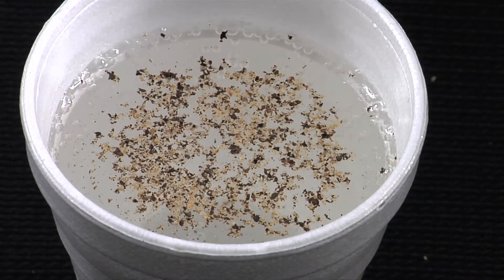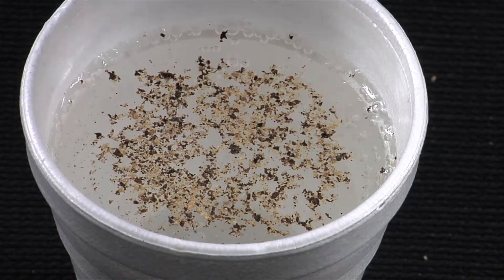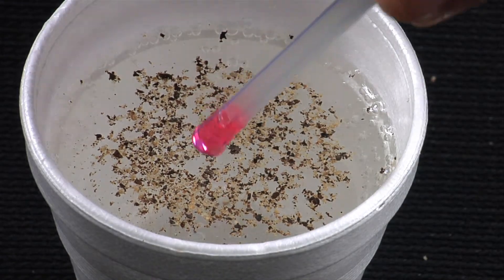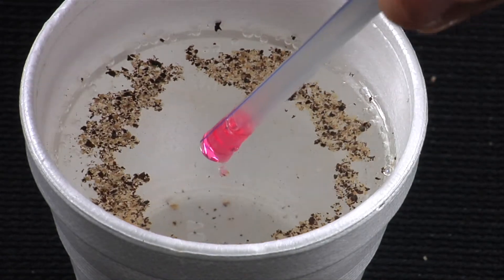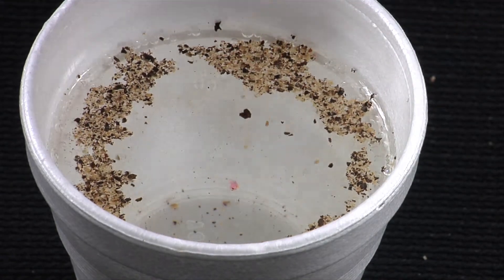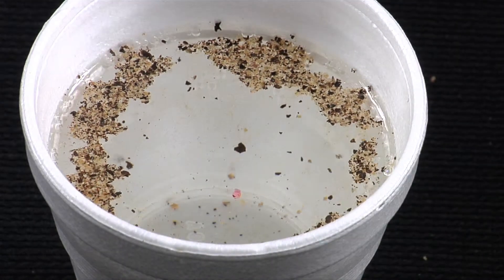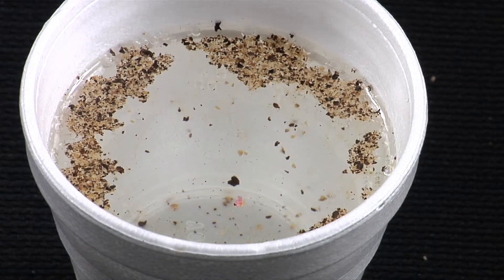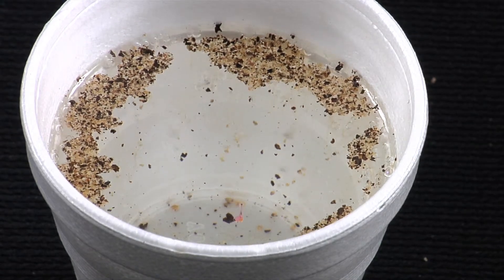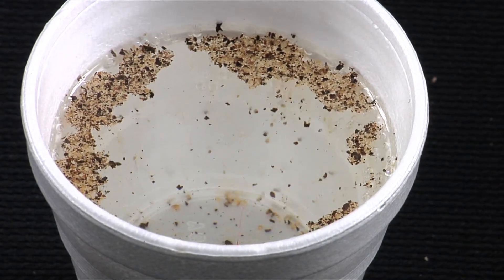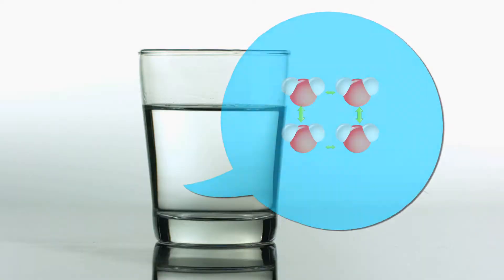When you dip the straw in soap and then touch the water, you essentially popped the layer of surface tension, and the pepper retreated to the side of the cup and began to sink.